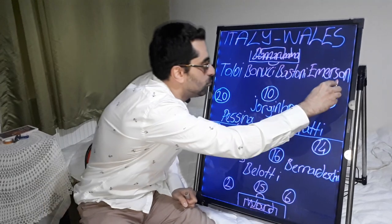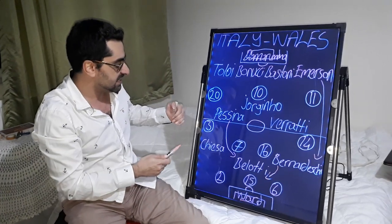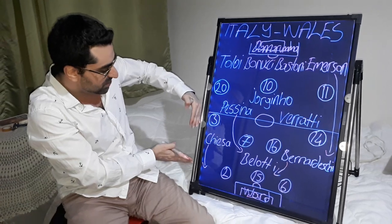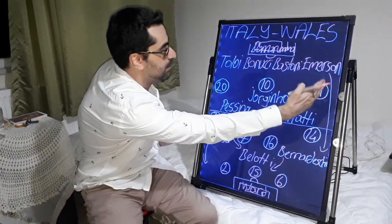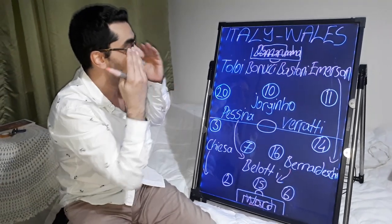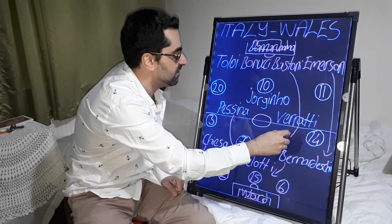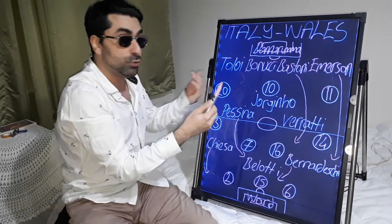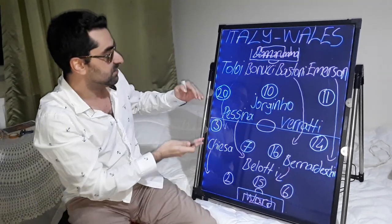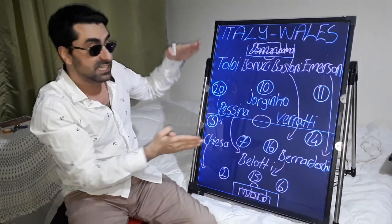Emerson moved higher and wider on the left wing, and Bernardeschi tucked infield. At the same time, Chiesa moved higher and wider, playing close to the right touchline. Chiesa and Emerson provided the width for Italy. Bastoni also moved higher, tucked infield, and supported Italy's attacks, turning the defence line into three during attacking phases.